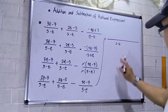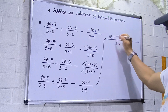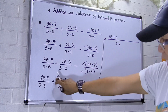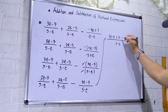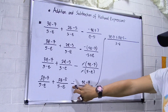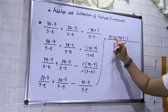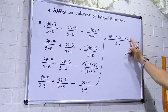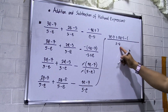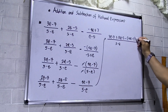LCD is (5 − e). Divide (5 − e) by (5 − e) — that is 1 — times the numerator (3e − 7). Plus: (5 − e) divided by (5 − e) is 1, times the numerator (2e − 5). Then minus — take note: if the sign is negative, I have to use circle brackets — (5 − e) divided by (5 − e) is 1, times the numerator (4e − 7).